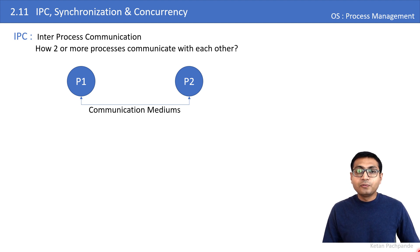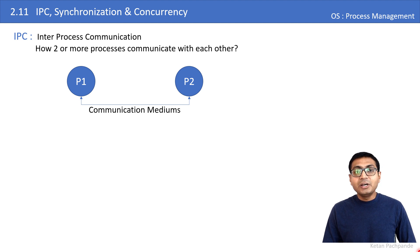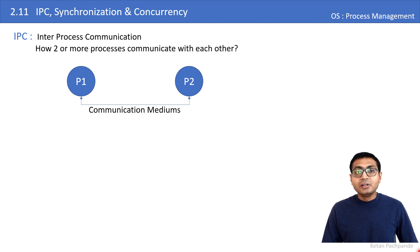When a process is declared, those four sections are initialized by the operating system, storing instructions, local variables, and global variables. But if process 1 wants to send a variable's value to another process — say, int a = 10 — the OS cannot tell the other process to read from process 1's sections, because the addresses assigned to one process are not accessible to other processes. They are private addresses for every process.